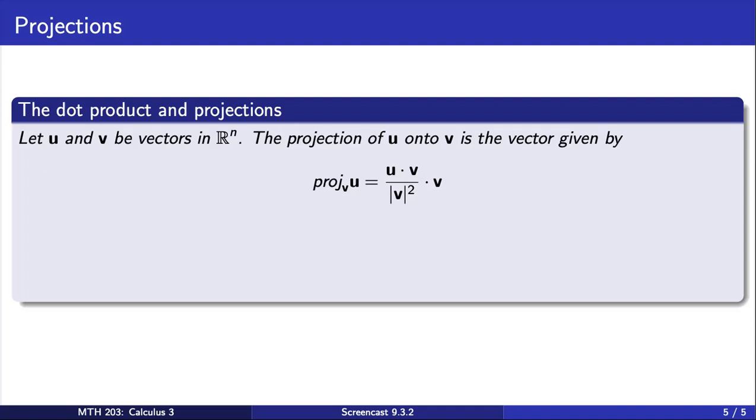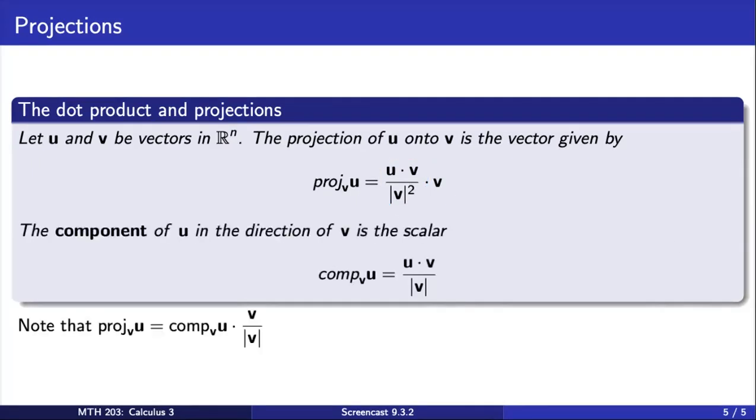As we will see in our studies, it is sometimes useful to write the projection of u onto v as a scalar times a unit vector in the direction of v. This scalar is called the component of u in the direction of v.